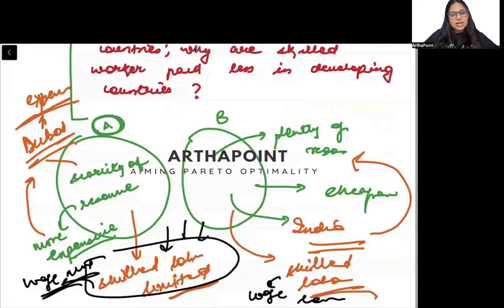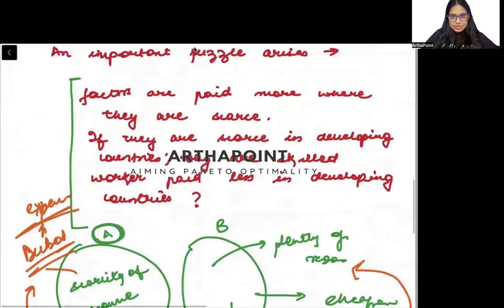Toh, logukko toh yaha rehna chahiyeh phir. Skilled labor should stay in the developing country. They should not go to developed country. Here, wages should be more. But that's not the case. So, this is a very big puzzle.